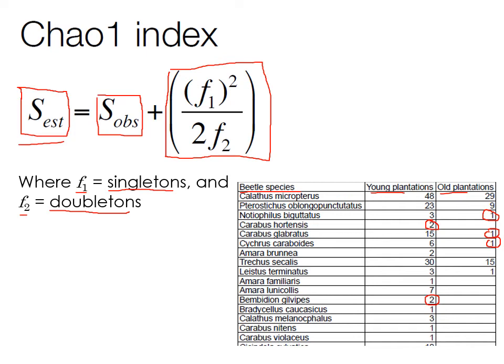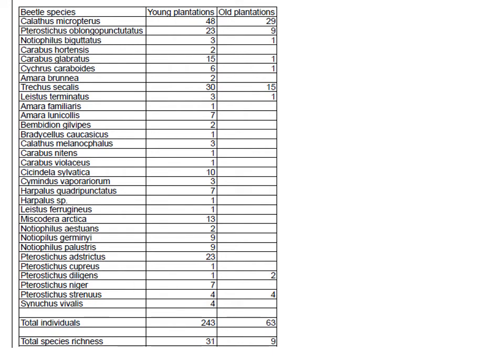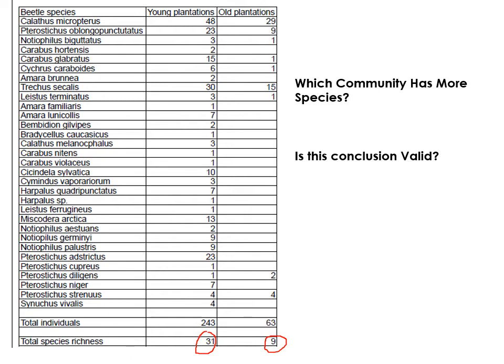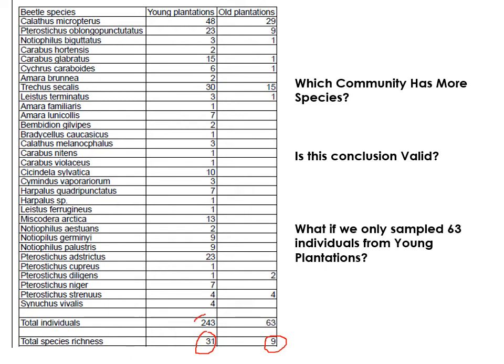Another approach is rarefaction — going back down the curve instead of extrapolating. Here's a beetle dataset with species from young plantations and old plantations. The young plantations have 31 species and the old have only 9 species — so it seems the young plantations are more diverse. But we sampled 243 individuals in the young plantations versus only 63 in the old, so maybe that richness difference is just an artifact of sample size rather than a real ecological difference.